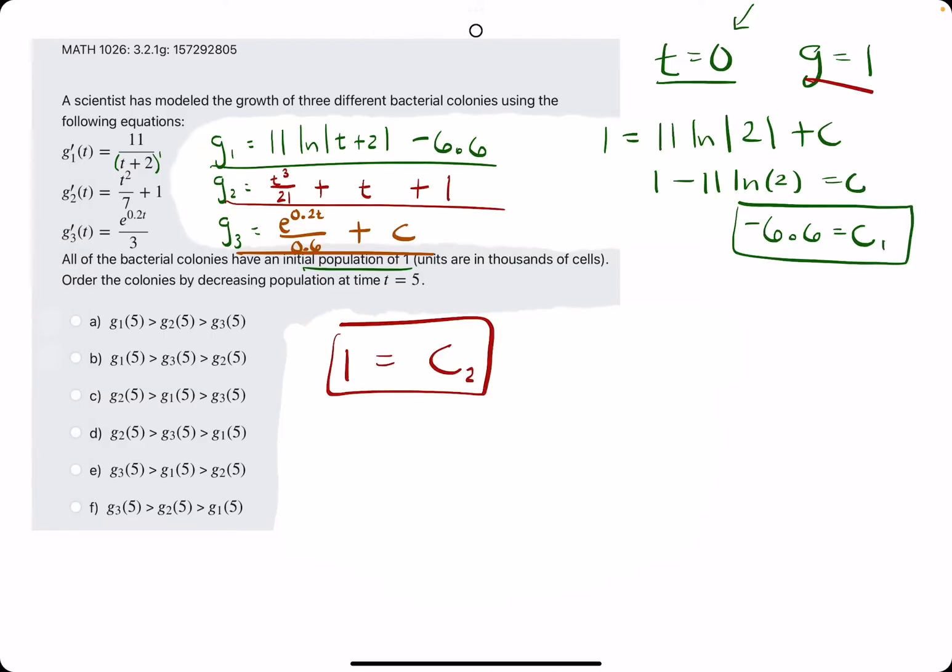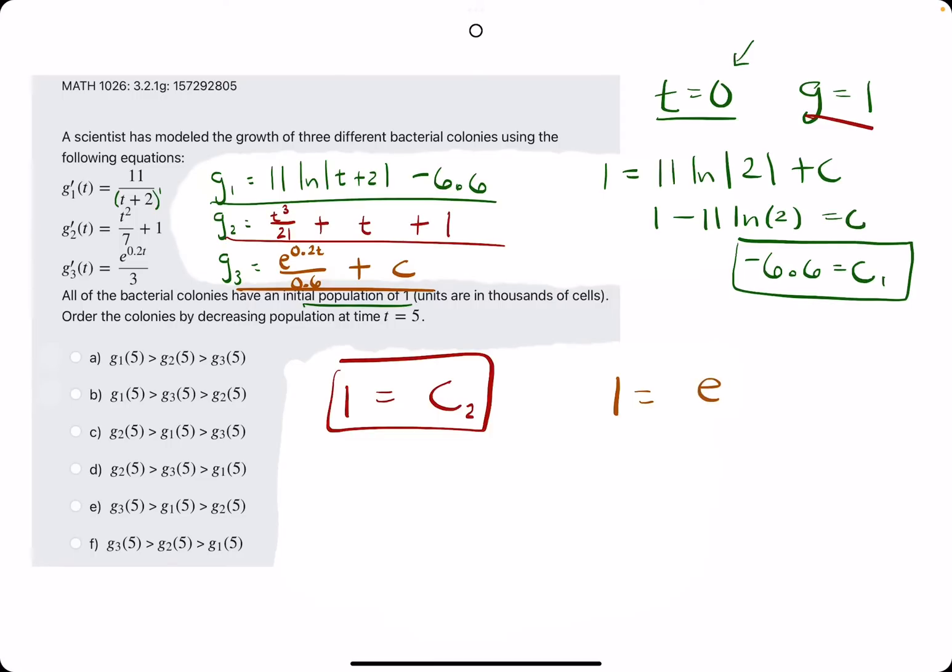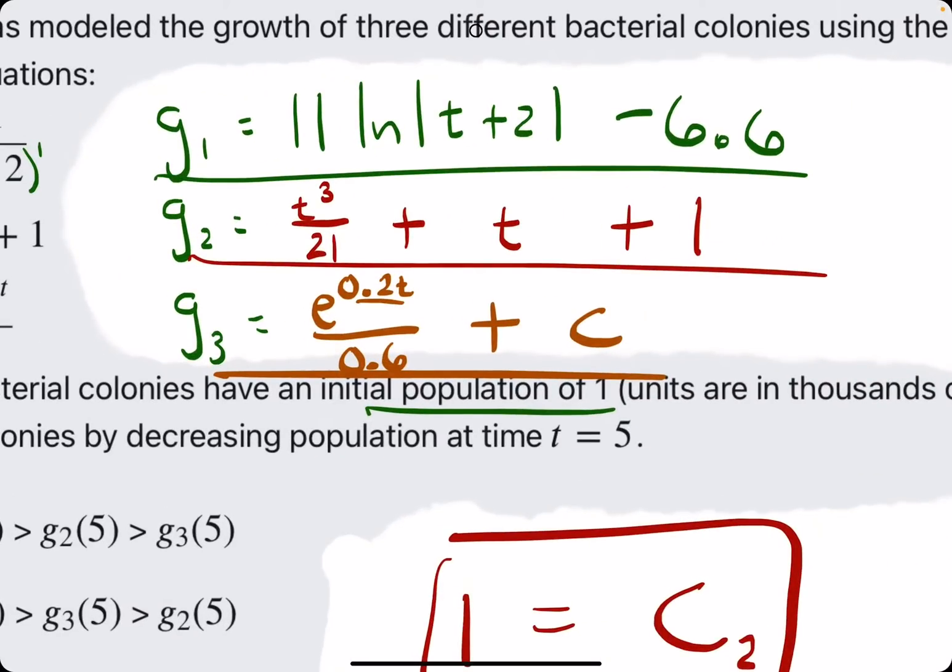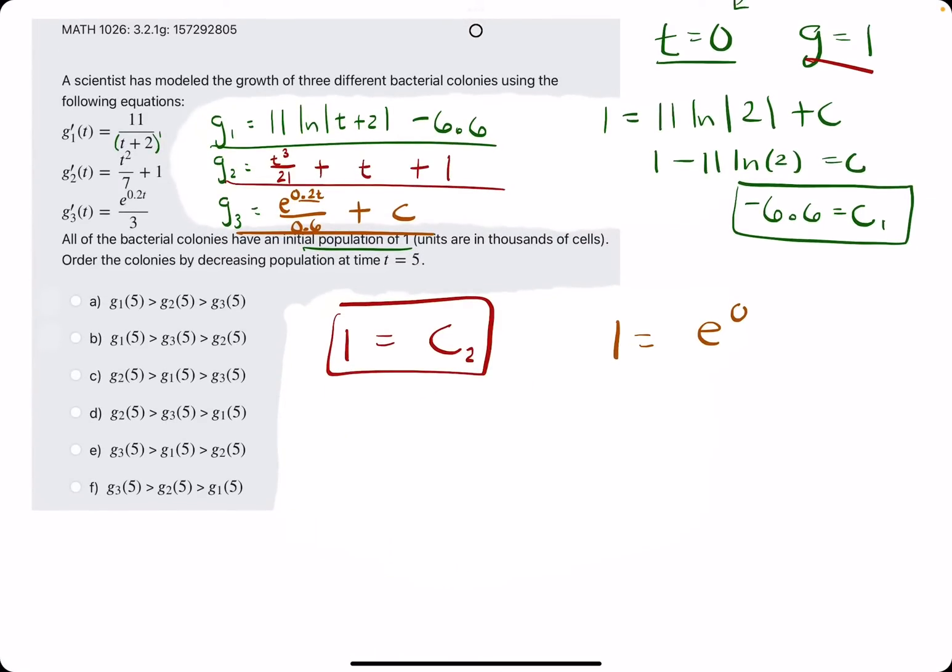Now, for the last one, g3 is also equal to 1 when t is equal to 0. So we plug in 0 to the t, and we have 0.2 times 0 is just 0, and then divide it by 0.6, and then plus c. Anything raised to the 0 power is 1, so we have 1 over 0.6.